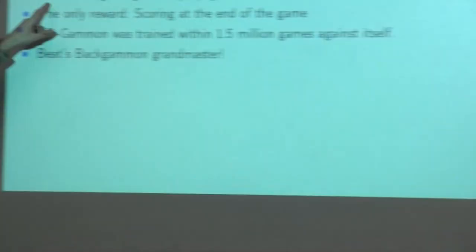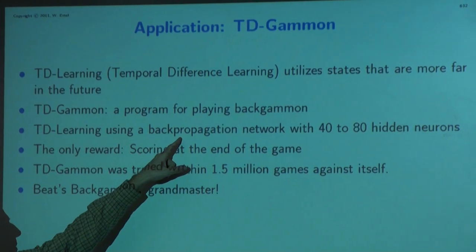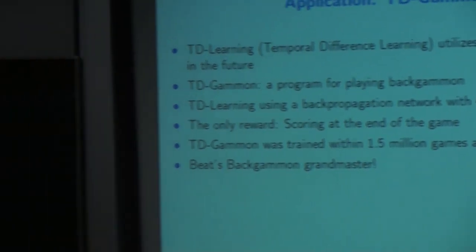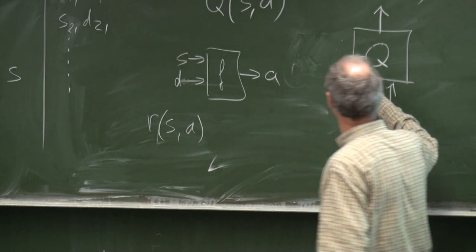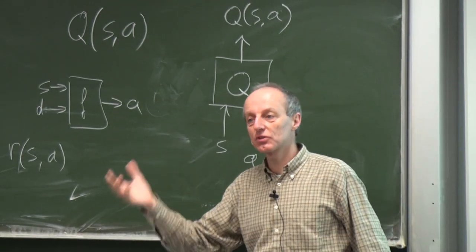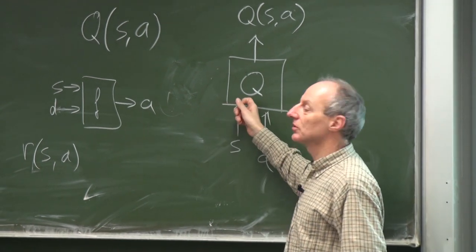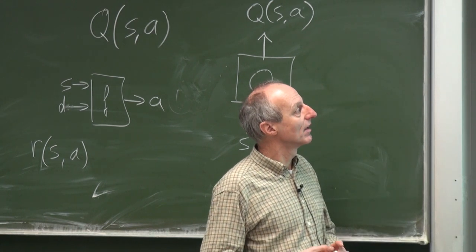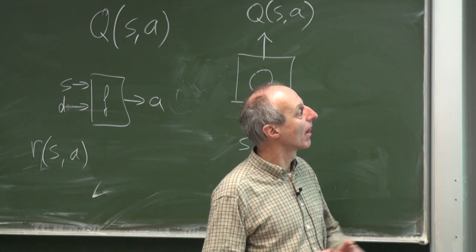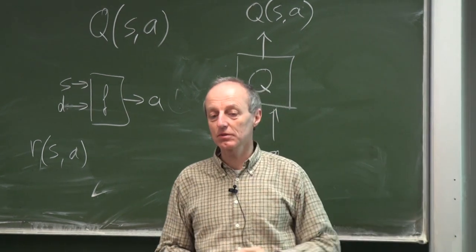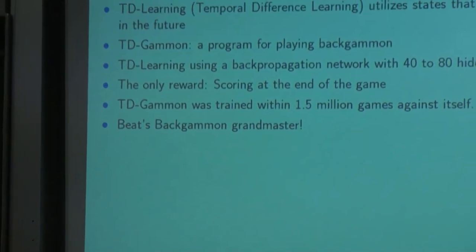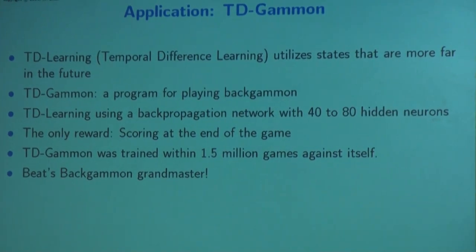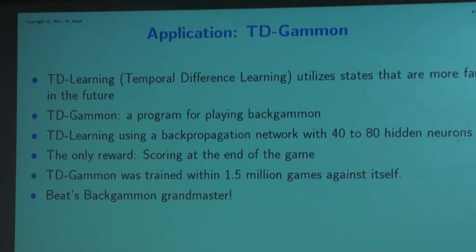Tesauro used TD learning with a backpropagation network as the function approximator for the Q-function, giving good generalization. The result wasn't bad — his agent was better than some backgammon grandmasters, which means better than almost every backgammon player.